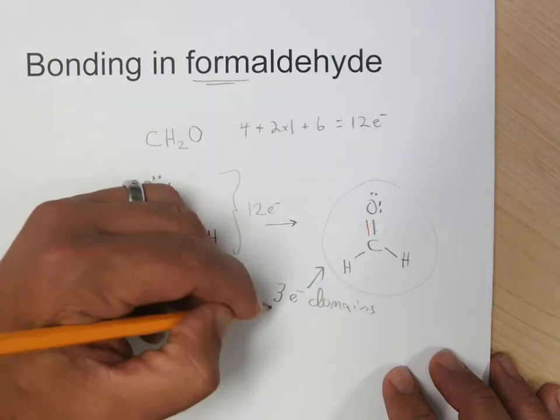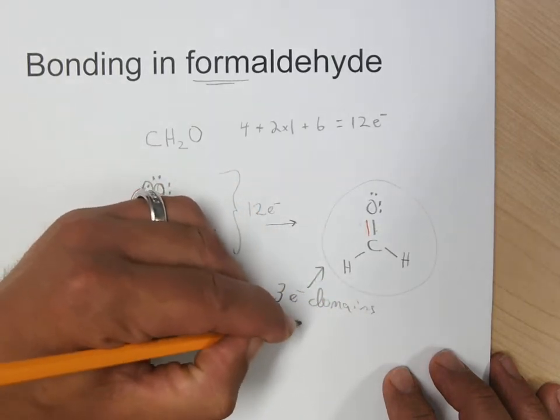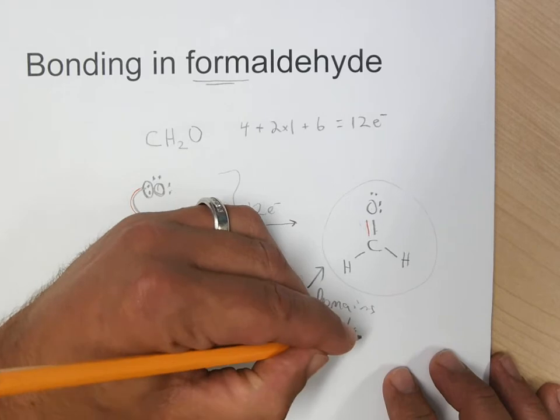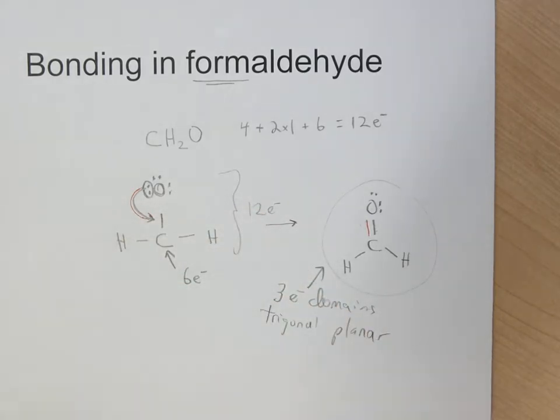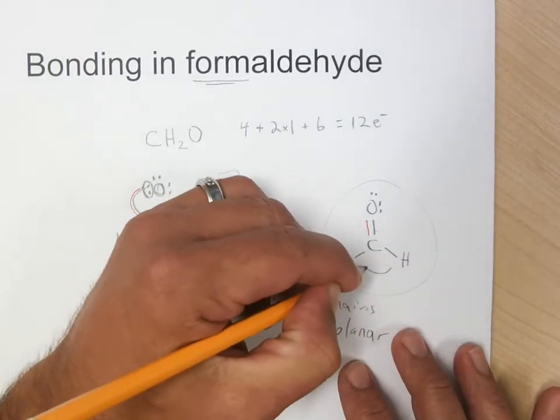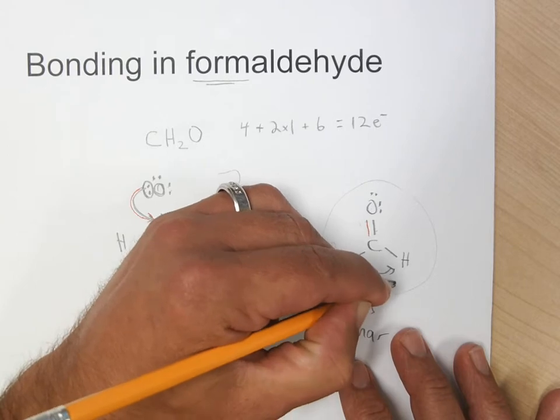the electron domain geometry is trigonal planar. So we take the Lewis structure and start applying the VSEPR ideas to it, and we can see that the approximate bond angles here are going to be 120 degrees,